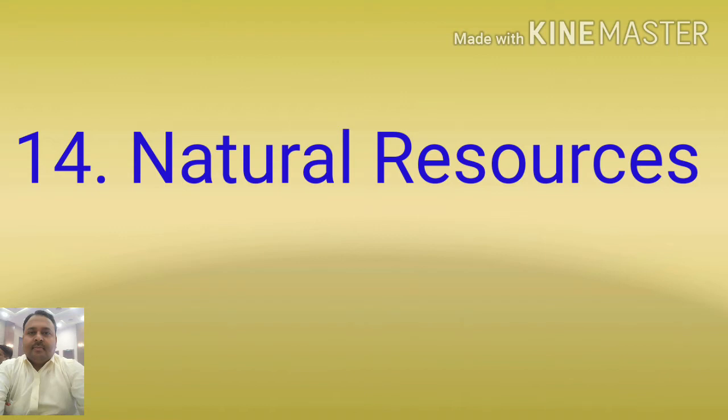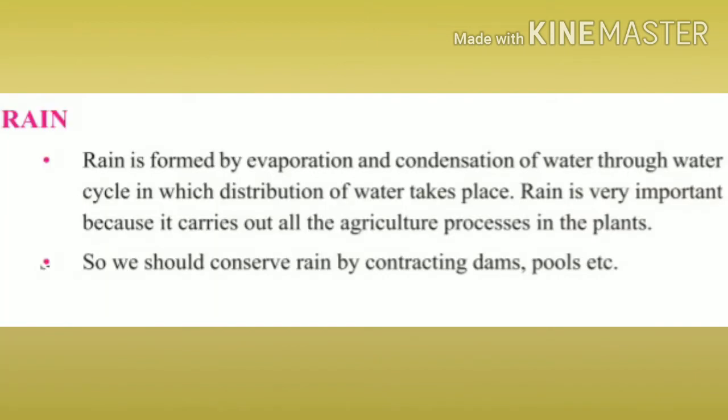We will also discuss acid rain and water as a wonder liquid. Rain formation: when water on land is heated by sunlight or evaporates through some other process, it rises in altitude as water vapor. It then undergoes condensation — that is, water vapor is converted into liquid water by cooling. This is how water is distributed through the water cycle.